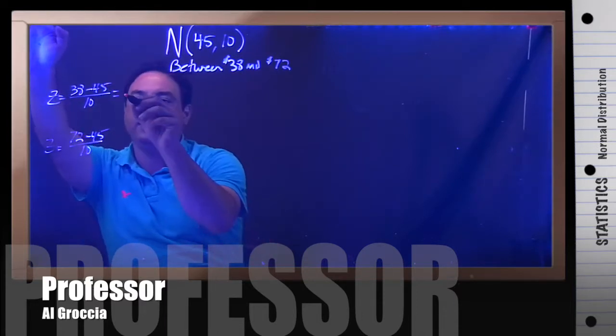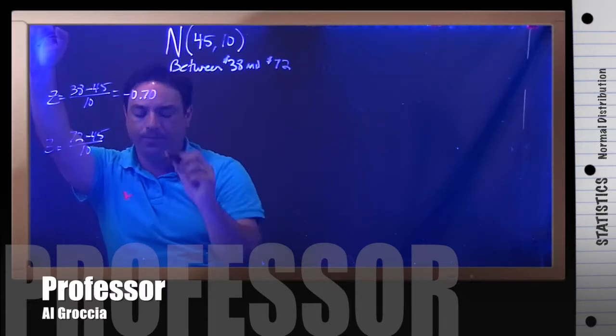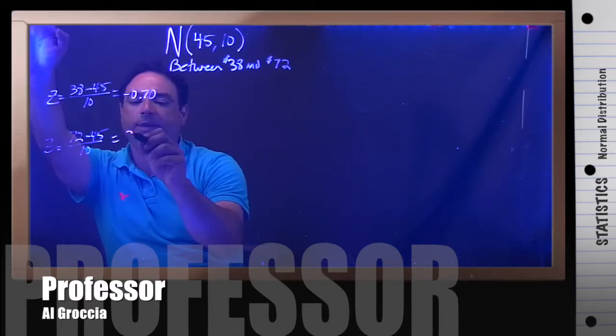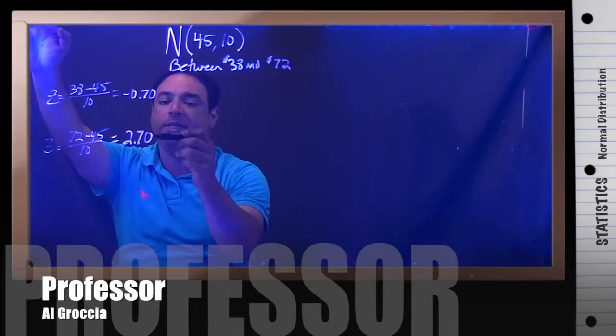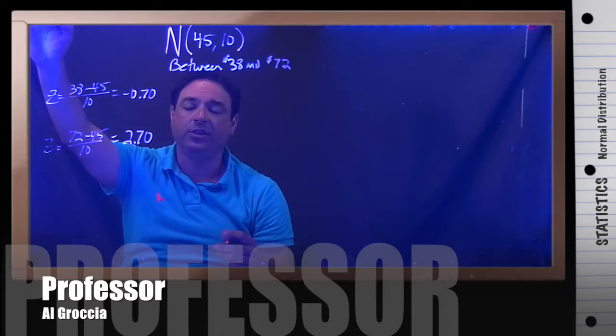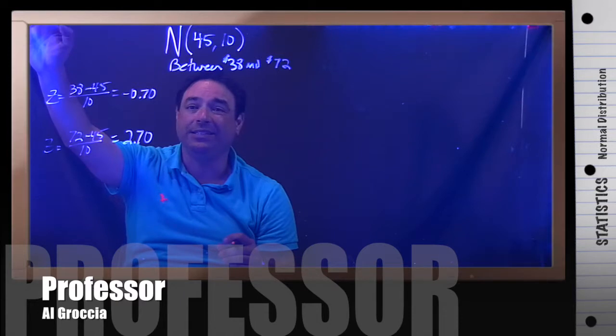And the first z-score would be negative 0.70. The second z-score would be 2.70. Remember, we want two decimal places because we're going to find our answer, our percent below, in the z-table.